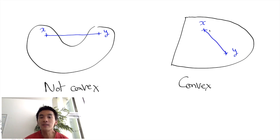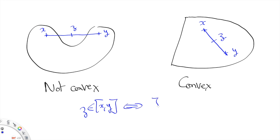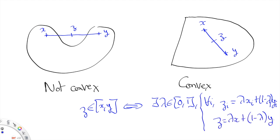More formally, a point in between X and Y is a point that can be rewritten as a so-called convex combination of X and Y, which means that there is some weight lambda in (0,1) such that Z equals lambda X plus (1 minus lambda) Y.